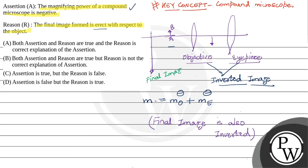The final image is inverted, so the reason is false. Therefore, the correct answer is Option C — the assertion is true but the reason is false. Hope you understood it well. Best of luck!